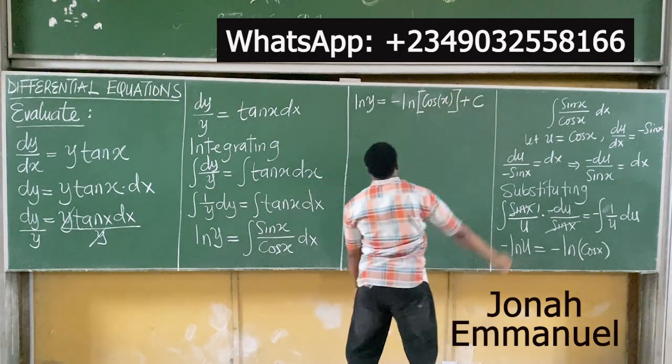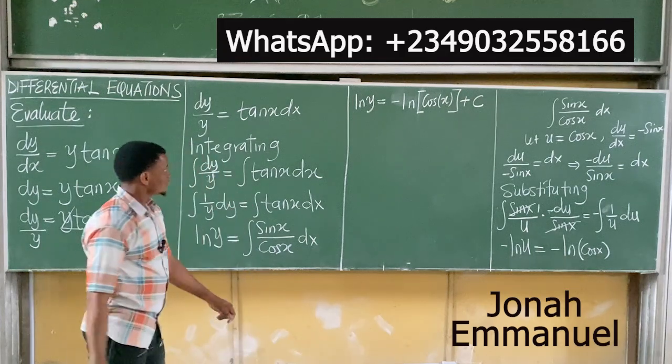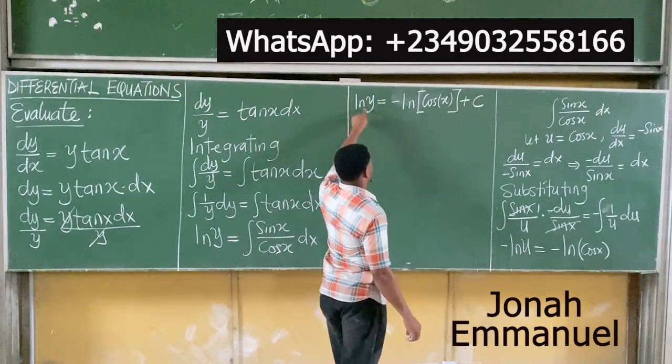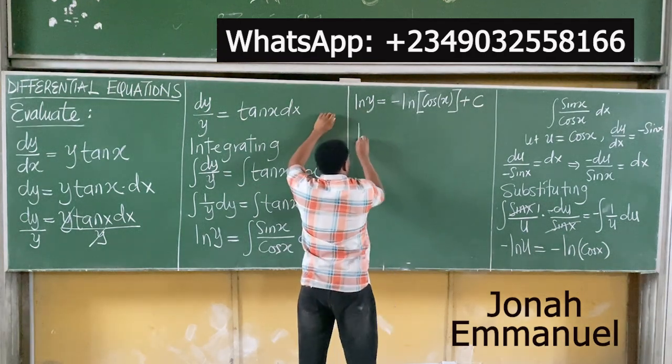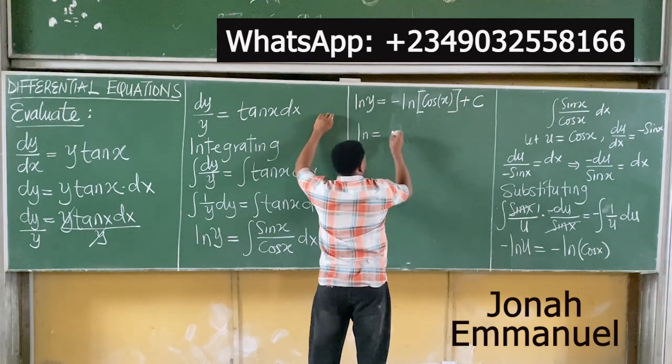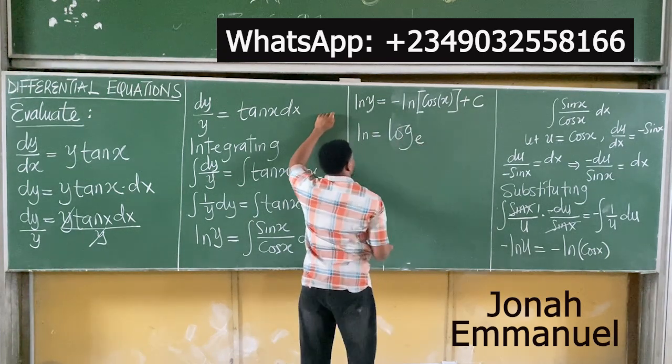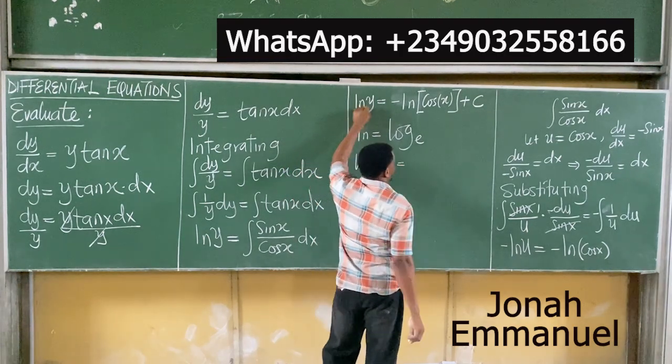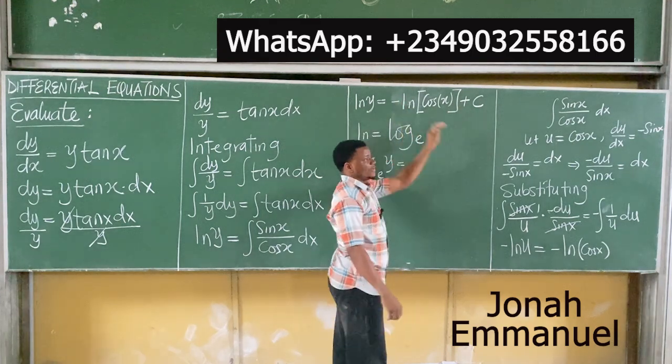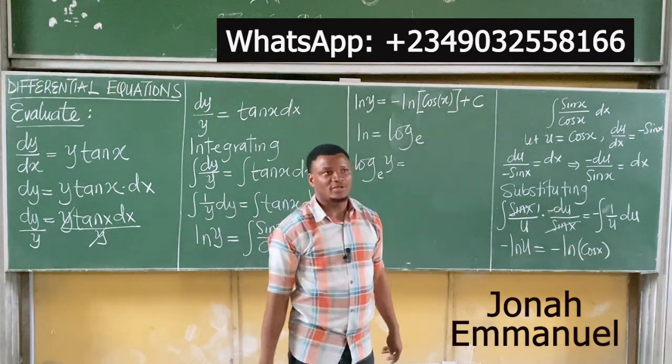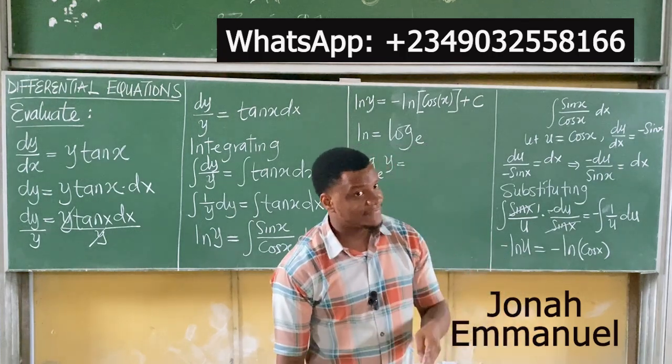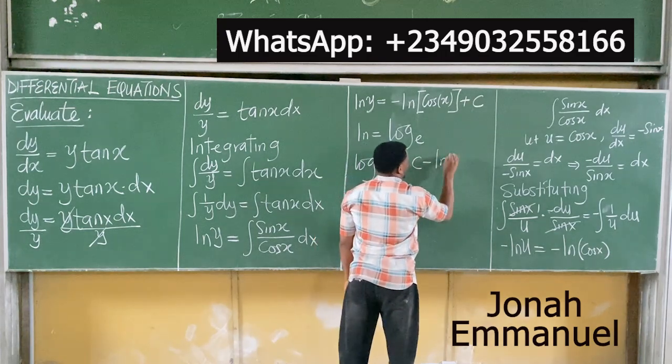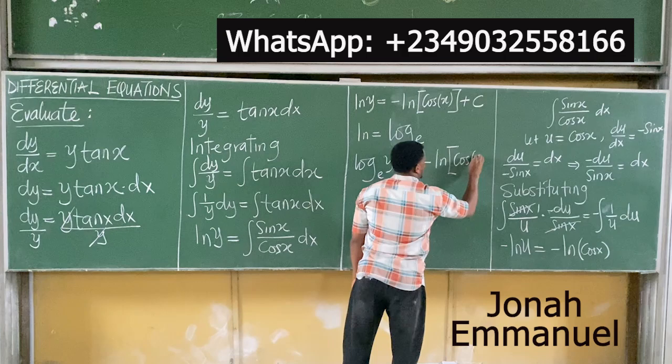Of course, plus c. So we want to get this, right? We said ln is equal to log to base e. So log base e of y. That's ln(y). Since I'm having positive and negative, in mathematics, at this point, you know that once you take a positive term first before a negative term, with that concept, positive first: c - ln(cos(x)).